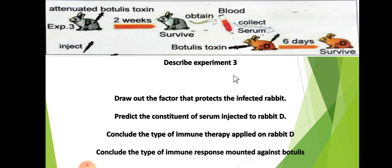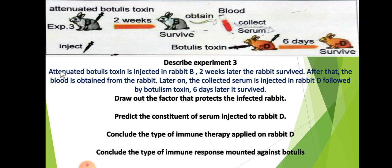The first question is: describe Experiment 3. Attenuated bottlis toxin is injected in Rabbit B. Two weeks later the rabbit survived. After that, the blood is obtained from Rabbit B. Later on, the collected serum is injected in Rabbit D, followed by bottlis toxin. Six days later, Rabbit D survived.